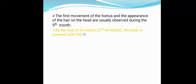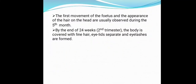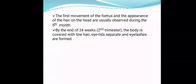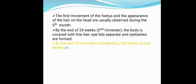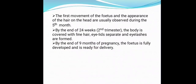By the end of 24 weeks, that is the second trimester, the body is covered with fine hair, eyelids separate, and eyelashes are formed. By the end of nine months of pregnancy the fetus is fully developed and it is ready for delivery.